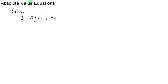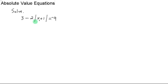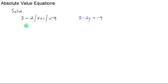This next example is a little bit harder, but really all you need to know is you need to get the absolute value by itself. The way to do that is to get rid of the 3 and the negative 2. Think of it as 3 minus 2 times y, where y represents the absolute value expression. So with 3 minus 2y equals negative 9, the first thing you do is subtract the 3. When you subtract 3 from both sides, you get negative 2 times the absolute value of x plus 1 equals negative 12.